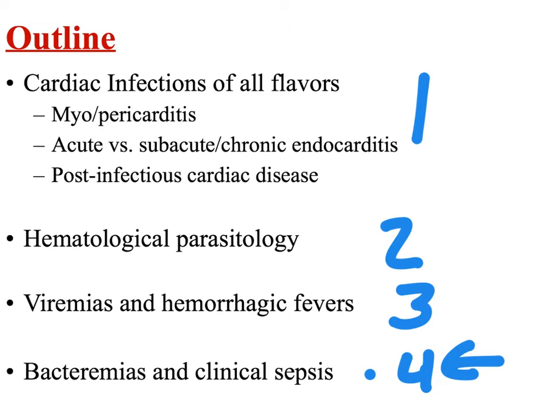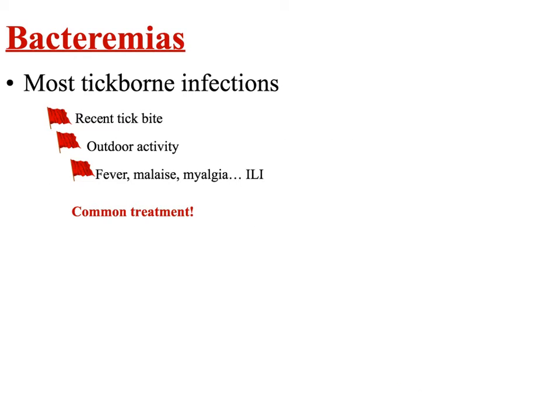There are four bacteremic organisms we're going to talk about, and I'm sure you've actually heard of at least two of them. When I have bacteremia as a type of infection, I'm referring to bacterial organisms that specifically target and have as a preferred site of infection the circulatory system. Primary bacteremias are usually exclusively tick-borne infections. Flags to think about are a recent tick bite or outdoor activity with potential for tick exposure, and implicit in that is the idea of seasonality to these diseases.